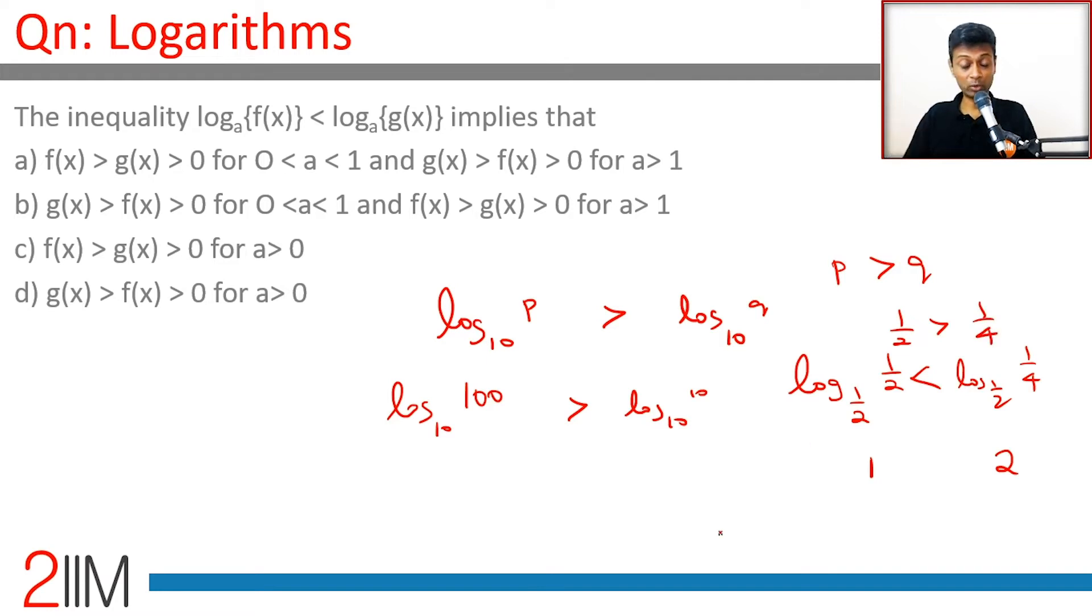It's a very interesting idea. If the log base were greater than 1, then log behaves like an increasing function - the larger the number is, the larger the log value would be. If the base were between 0 and 1, then it will be the other way around. The higher the number is, the smaller will be the log.